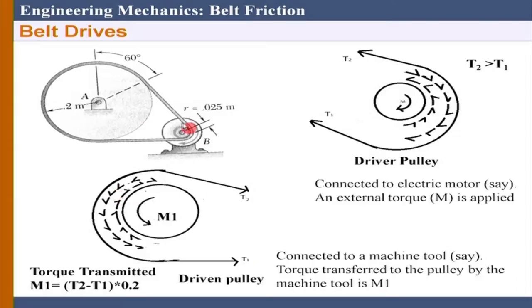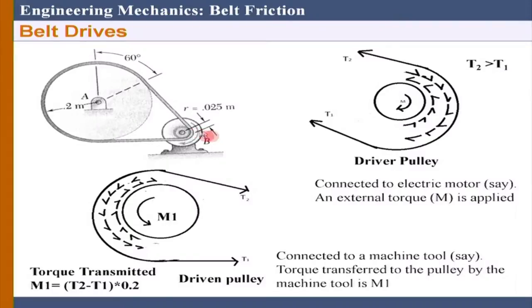Rotation is happening in the same direction. What I have drawn is the free body of the forces - nothing to do with the kinematics of the problem. There is a difference between kinetics and kinematics. Kinetics deals with force. What is shown here is all forces, which is a general term that also includes moment. To rotate this drum, to run the motor, I need a torque that is being applied. Everything is rotating clockwise - that is the kinematics.